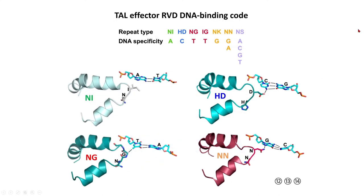Here's the RVD code. Depending on what these two amino acids are in the turn, NI will specify binding to an A base, HD a C base, and so on. There are also a couple which are non-specific or bind to a G or an A.